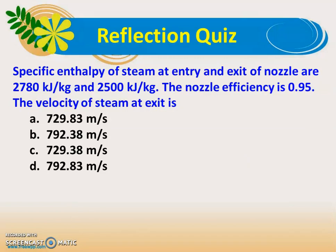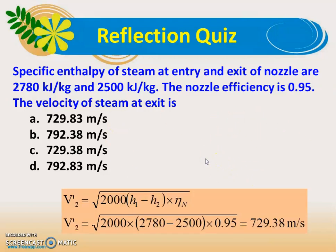Numerical example 2: the specific enthalpy of steam at entry and exit are 2780 kJ/kg and 2500 kJ/kg, and the nozzle efficiency is 0.95. Using V2' = √(2·(H1 − H2)·η_n) = √(2000·(2780 − 2500)·0.95), the exit velocity is 729.38 meters per second.